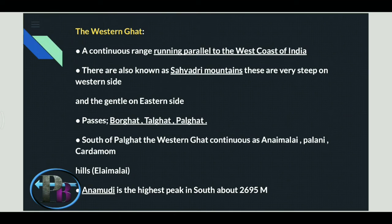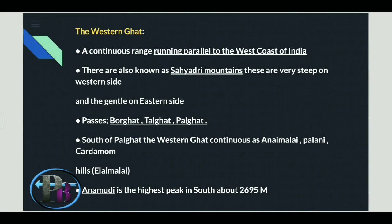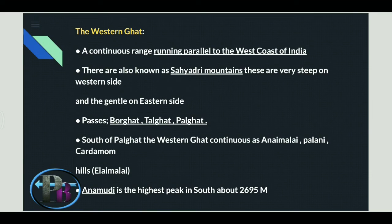The Western Ghats are a continuous range running parallel to the west coast of India, located in the western part of India. They are also known as the Sahyadri Mountains. Important passes include Borghats, Thalghat, and Palghat. Ranges include Anamalai, Palani, and Cardamom Hills. The highest peak in the Western Ghats is Anamudi, the highest peak in South India, at about 2,695 meters.